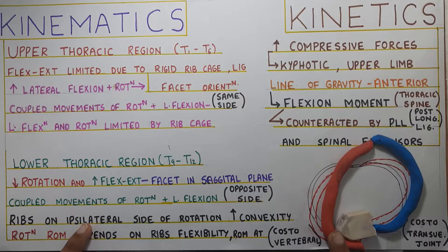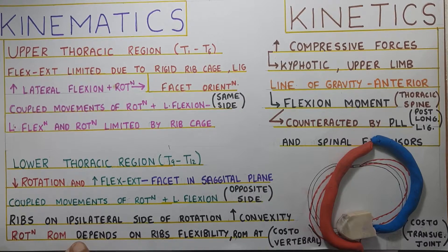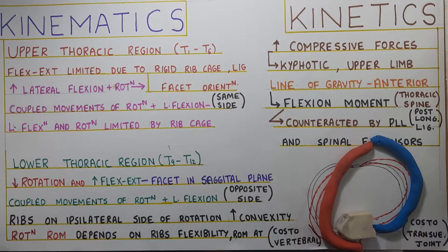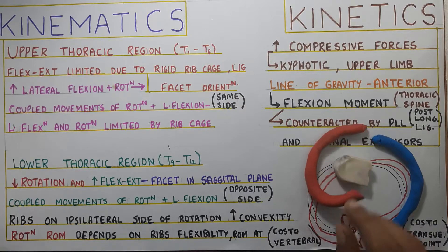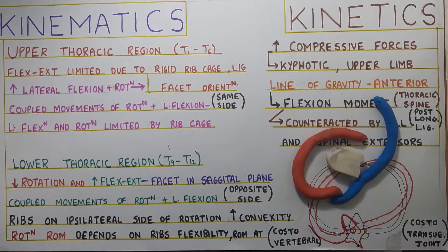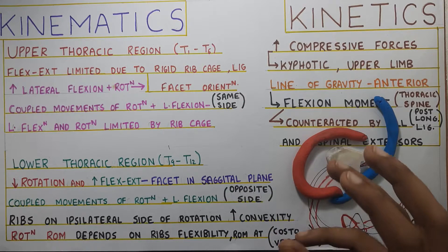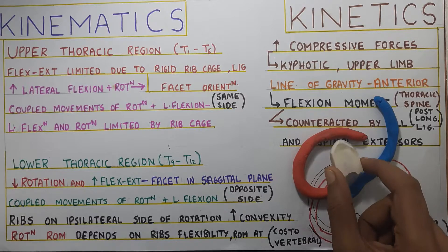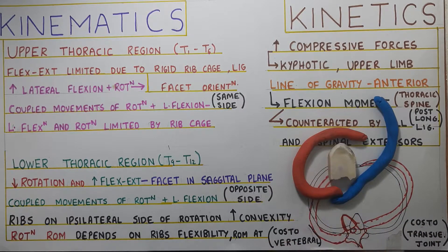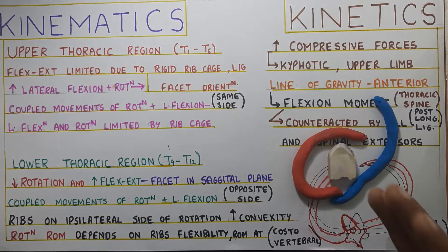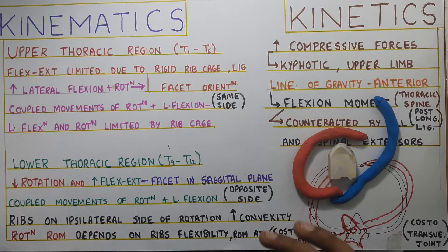The ribs on the ipsilateral side of rotation increase in convexity, and the rotation range of motion depends on the ribs' flexibility and ability to undergo distortion, as well as the range of motion at the costovertebral and costotransverse joints. With age, these joints start ossifying and range of motion is reduced, which in turn reduces rotation and other movements at the thoracic spine. So rotation range of motion highly depends on rib distortion ability and mobility at these joints.